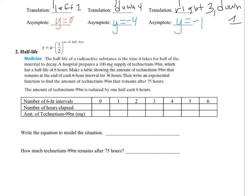So you start out with 100 mg, the number of hours elapsed. To fill in this table, if you have number of 6 hours intervals, the number of hours that elapses would be 0. So you'd still have 100 mg. And then after 6 hours, which is 1 half-life, you would have half of 100, which is 50.